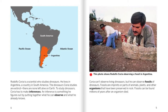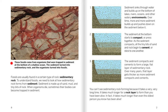This photo shows Rodolfo Correa observing a fossil in Argentina. Correa can't observe living dinosaurs, but he can observe fossils of dinosaurs. Fossils are imprints or parts of animals, plants, and other organisms that have been preserved in rock. These fossils come from organisms that were trapped in sediment at the bottom of a shallow ocean. Sediment turned into sedimentary rock, and the organisms turned into fossils.